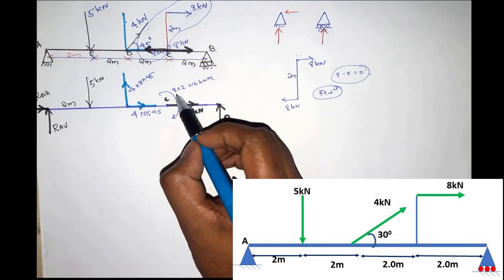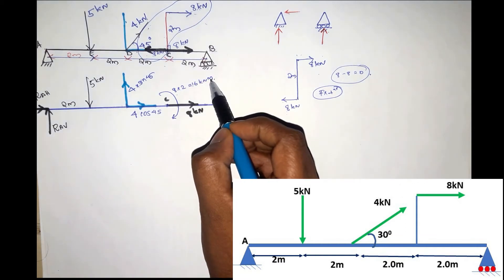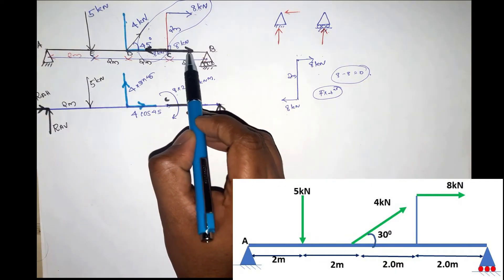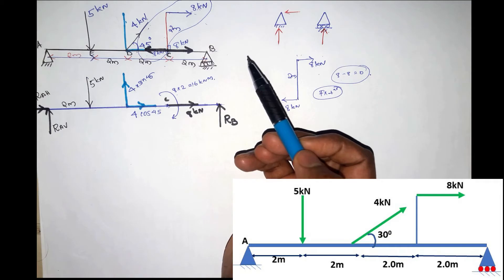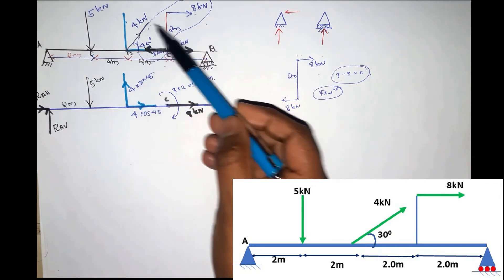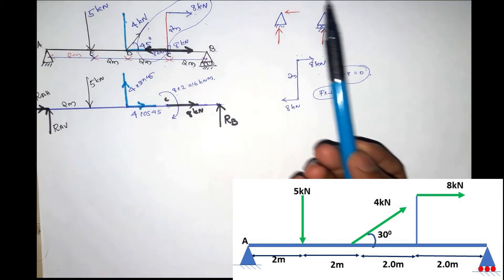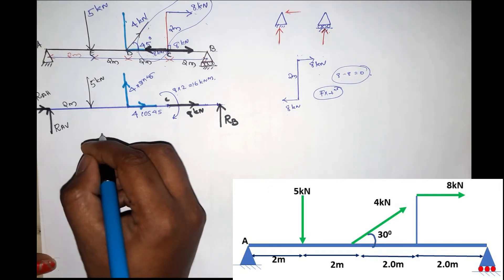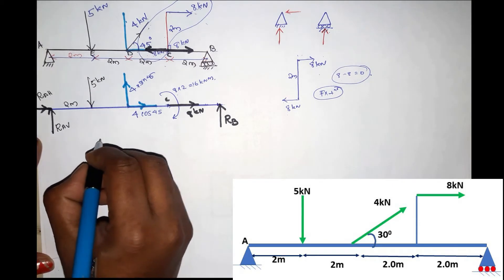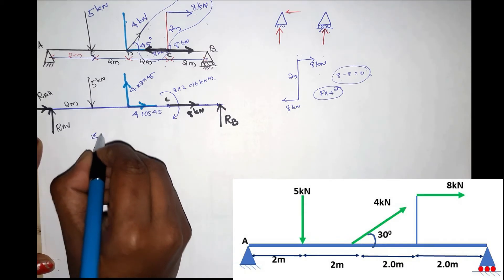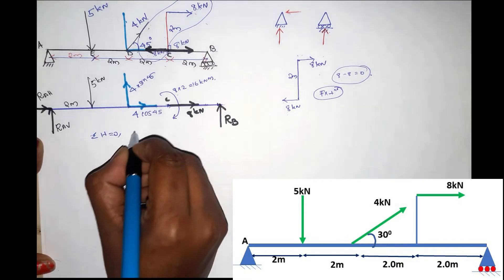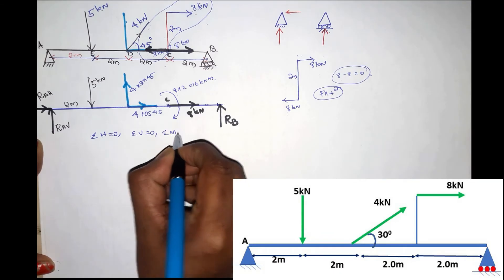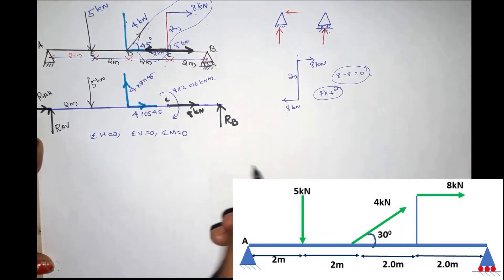That is, 8kN times 2m gives 16kNm. We have marked and simplified the forces. The next step is to apply the equilibrium conditions: Sigma H equals zero, Sigma V equals zero, and Sigma M equals zero. These are our equilibrium equations.